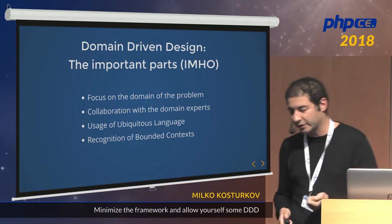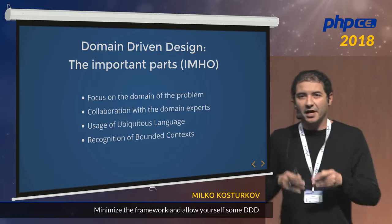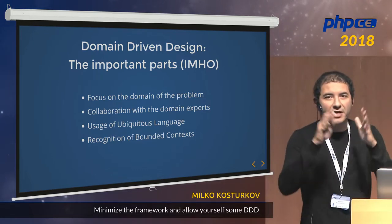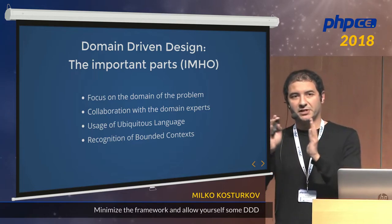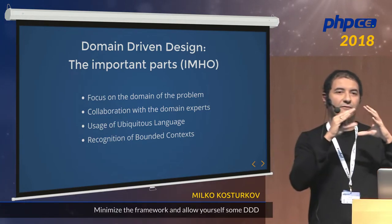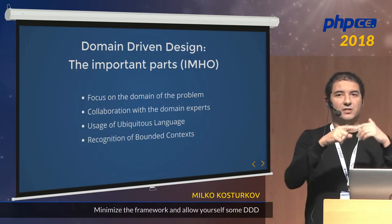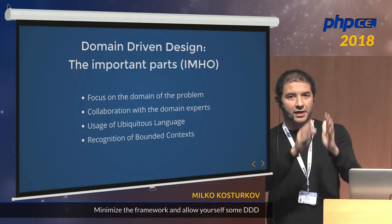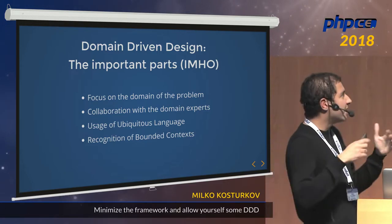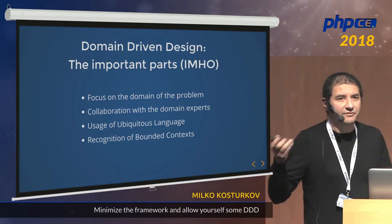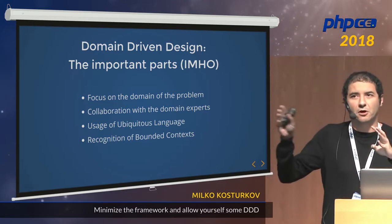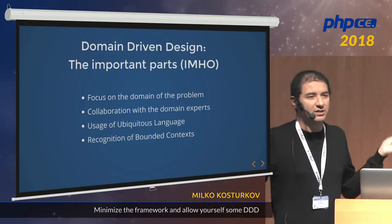And of course the recognition of bounded contexts: every serious problem has a number of sub-problems. Recognize the sub-problems, deal with them in their own mini-universe, have code that deals with each one, recognize where they overlap, and isolate the rest that doesn't need to overlap. Basically, these are the values. I find them very, very nice. They're rather simple — very abstract when you just talk about them like this, but actually very simple.